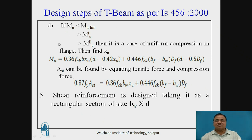If XU is less than XU limit then and greater than MU' when it is a case of uniform compression in the flange then find XU by using following equation that is MU is equal to 0.36 FCK BW XU into D minus 0.42 XU. This is lever arm for central web portion and then afterwards 0.446 FCK BF minus BW that is remaining portion of flange into DF into D minus 0.5 DF.